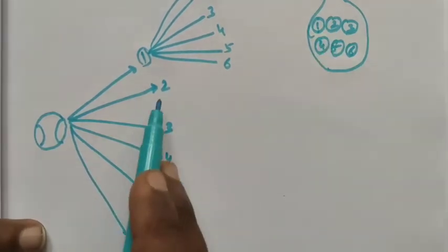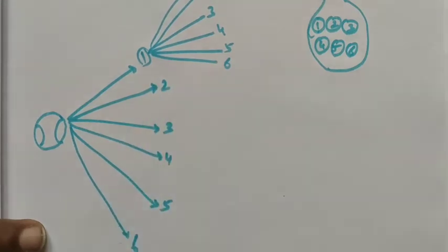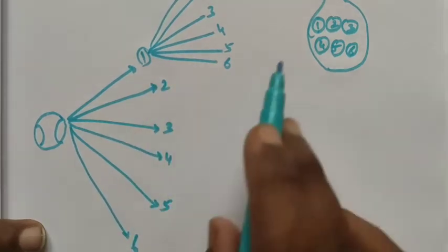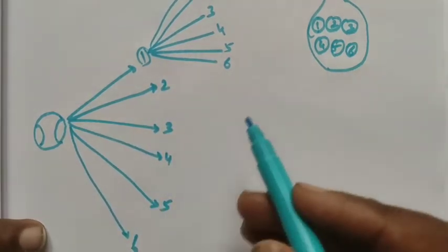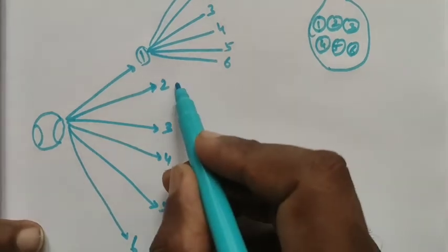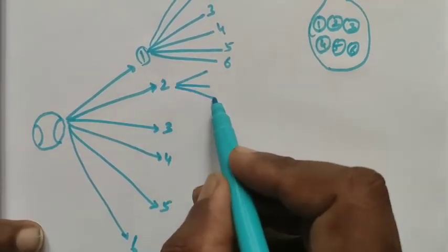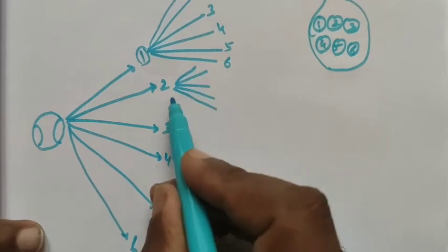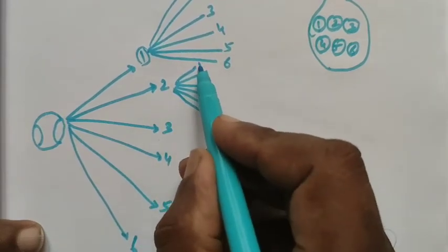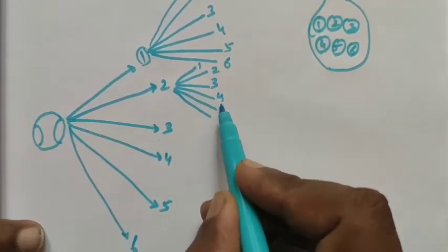If the first ball is number 2, then the second ball can be 1, 2, 3, 4, 5, or 6.